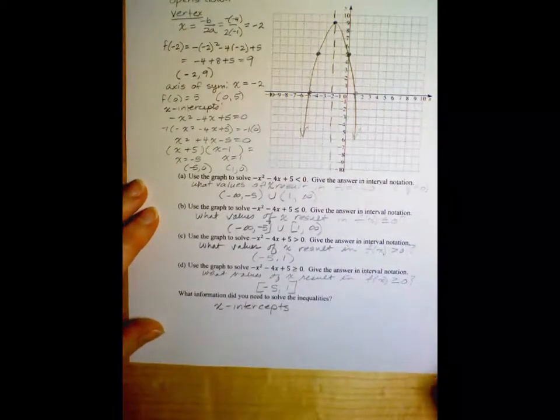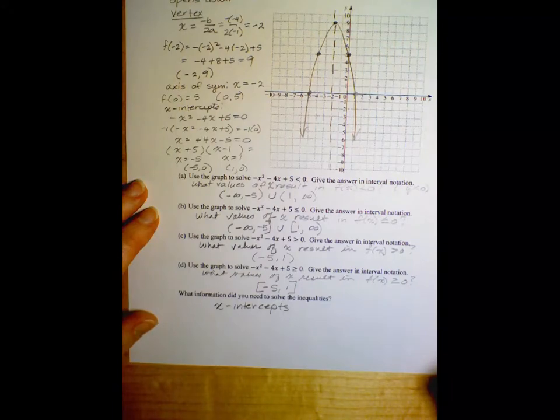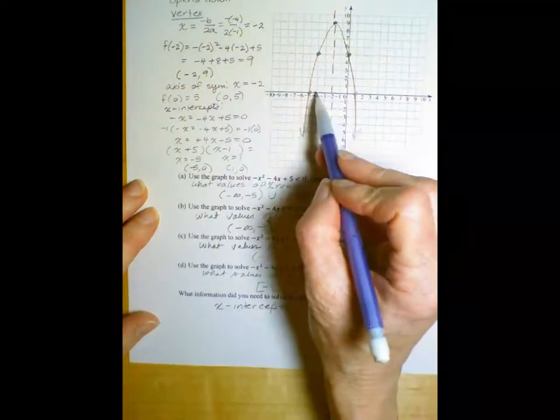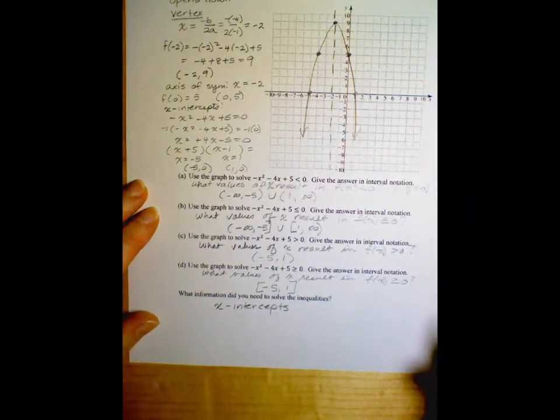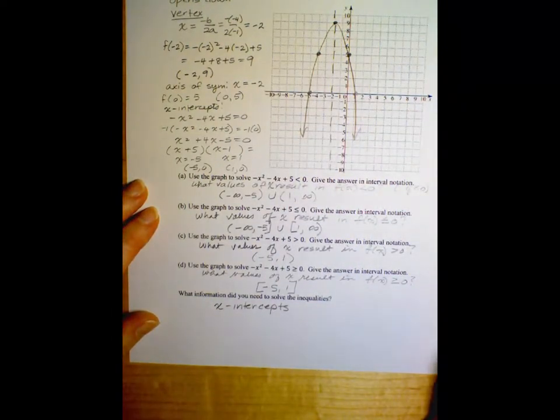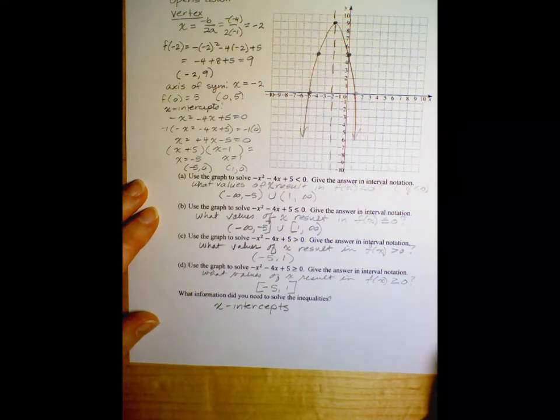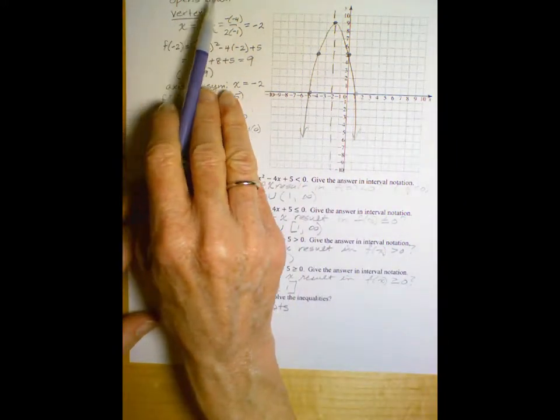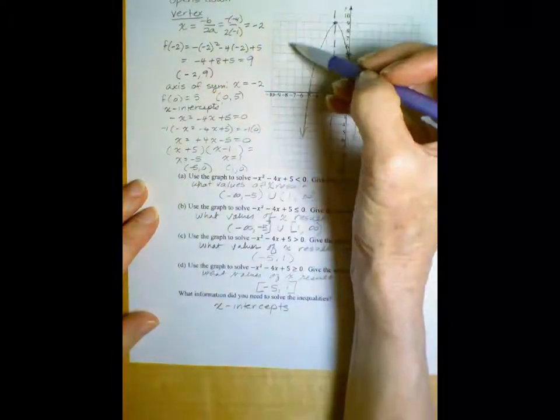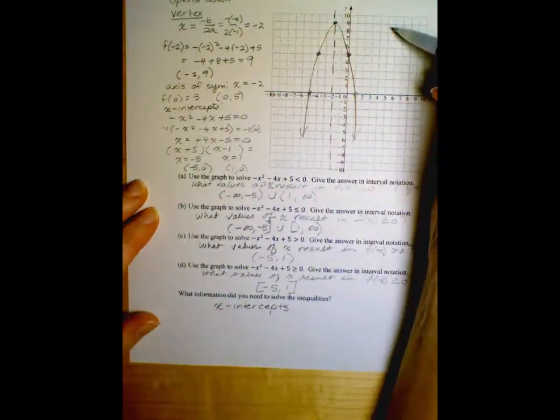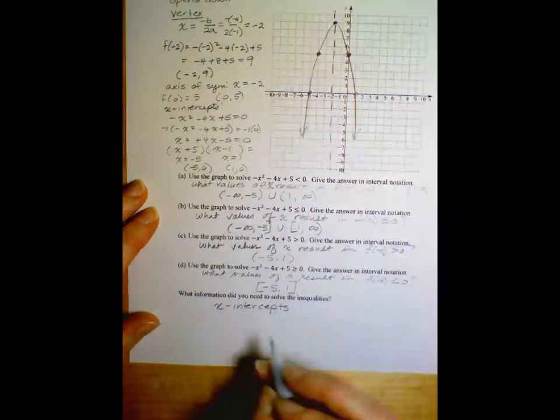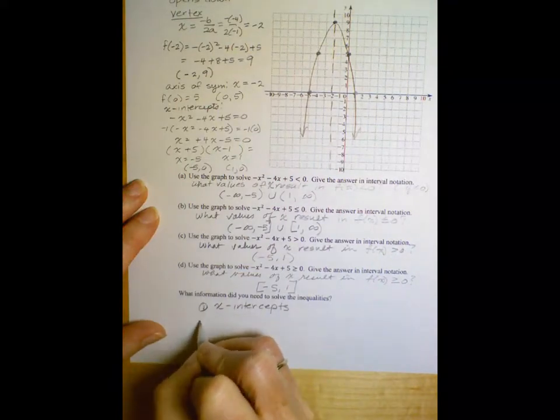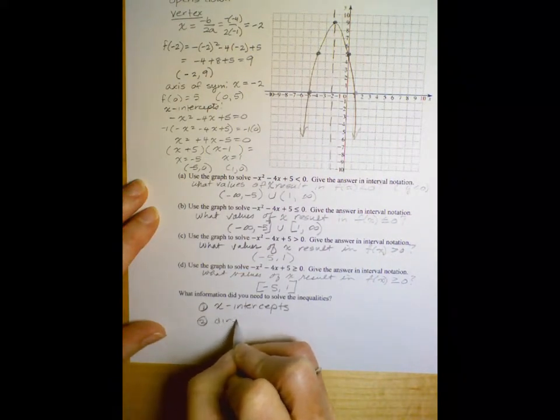Well, we kept referring to the x-intercepts, right? And they ended up being in our intervals. So we definitely need the x-intercepts. Anything else that we got up here? Did we use the vertex? Nope, didn't use the vertex for anything. It doesn't matter how high this goes. We just need to know when we are above the axis, when we are below. Did we use the axis of symmetry? No, didn't use that for anything. Does it matter if it opens up or down?